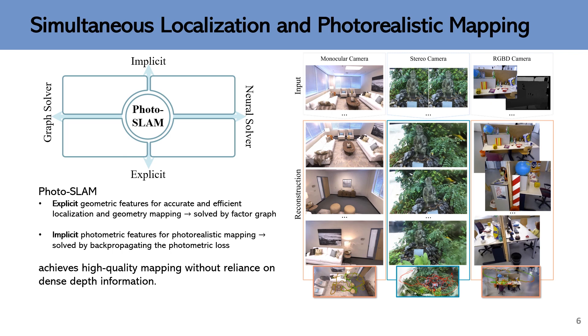In addition, we learn implicit photometric features online to represent the texture information of the observed environment, which is stored by differentiable rendering. We achieve high-quality mapping without relying on dense depth information. It can support RGB cameras, as well as monocular and stereo cameras.